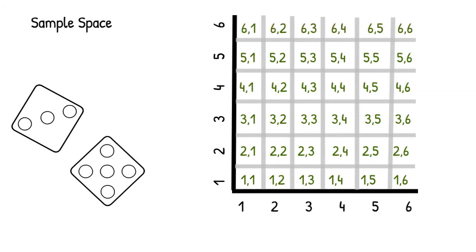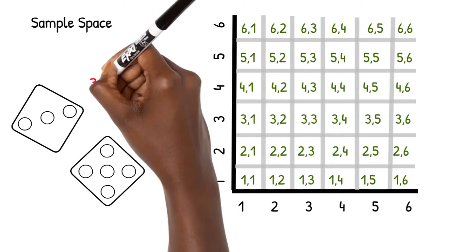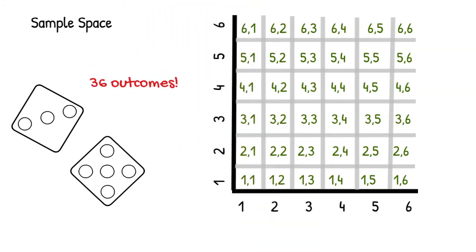Since there are six rows and six columns in this sample space, six times six tells us that there are 36 outcomes in all. Let's see how examining the sample space in this way can help with an example probability question. When we roll two dice, what is the probability of getting at least one six?